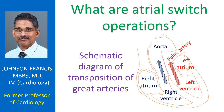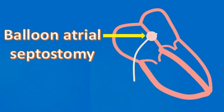The ventricles are the lower muscular chambers of the heart. The aorta carries oxygenated blood to the whole body, while the pulmonary artery carries blood returning from the body to the lungs for oxygenation.